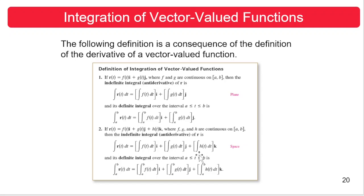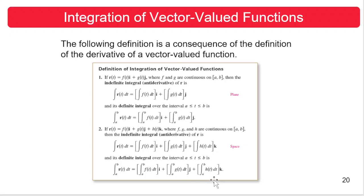Its corresponding definite integral over the interval where a ≤ t ≤ b is defined as: the integral of r of t dt from a to b equals the integral of the first component times i, plus the integral of g of t dt from a to b times j, plus the integral of h of t dt from a to b times k.